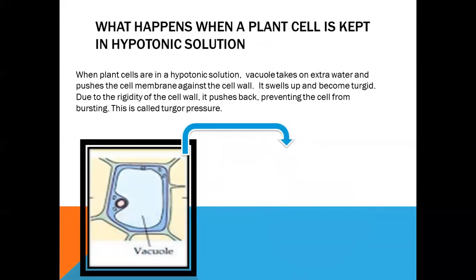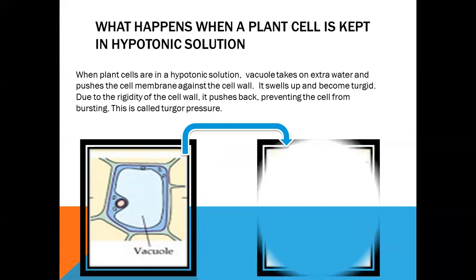Now let us see in case of plant cell. When a plant cell is kept in hypotonic solution, then water will enter inside the cell. And the plant cell is having a vacuole, so this vacuole will take up the water. And this is going to exert a pressure on the cell membrane and cell wall.